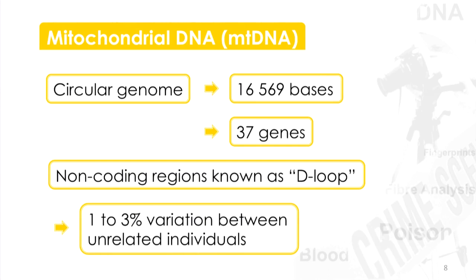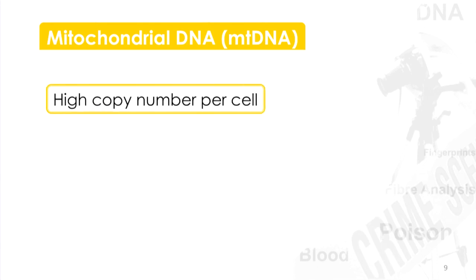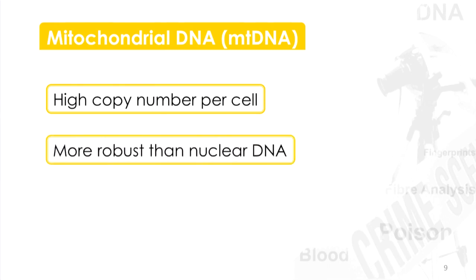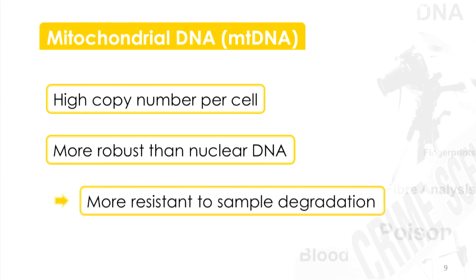The good thing about mitochondrial DNA, what makes it useful, is that it has a high copy number per cell. Within a single cell, there is only one copy of your nuclear DNA, but there are multiple copies of your mitochondrial DNA. It is also more robust than nuclear DNA — more resistant to sample degradation. So if you have a biological sample that's old or has been exposed to harsh treatment, you're more likely to be able to extract and analyze the mitochondrial DNA compared to the nuclear DNA.